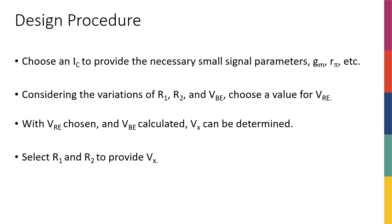Let's say that we are designing these biasing circuits for an amplifier. Generally, everything related to the amplifier — most importantly the gain — depends on the small signal parameters. So assume that we know gm and rpi that we want: we know a certain gm and a certain rpi.